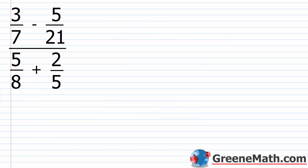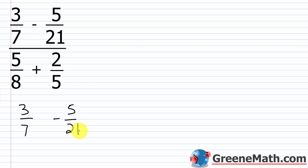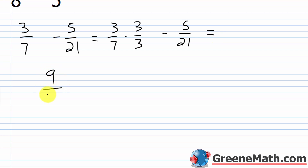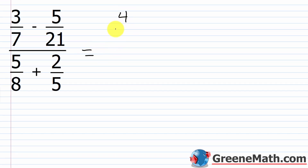Let's take a look at another one: 3/7 minus 5/21 over 5/8 plus 2/5. Let's simplify the numerator first. We have 3/7 minus 5/21 — we need a common denominator, which is 21 since 21 is 7 times 3. So I multiply 3/7 by 3/3, giving 9/21, then minus 5/21. That gives me 4/21. So the simplified numerator for the complex fraction is 4/21.